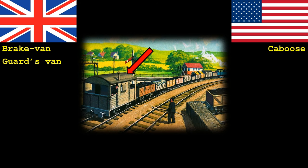Finally, right at the very end of the train you will find another truck or car specifically to provide the train with additional braking. Hence why in the UK it is called a brake van. However since the guard is always positioned here it is also known as a guards van. In America you would refer to this car as a caboose.